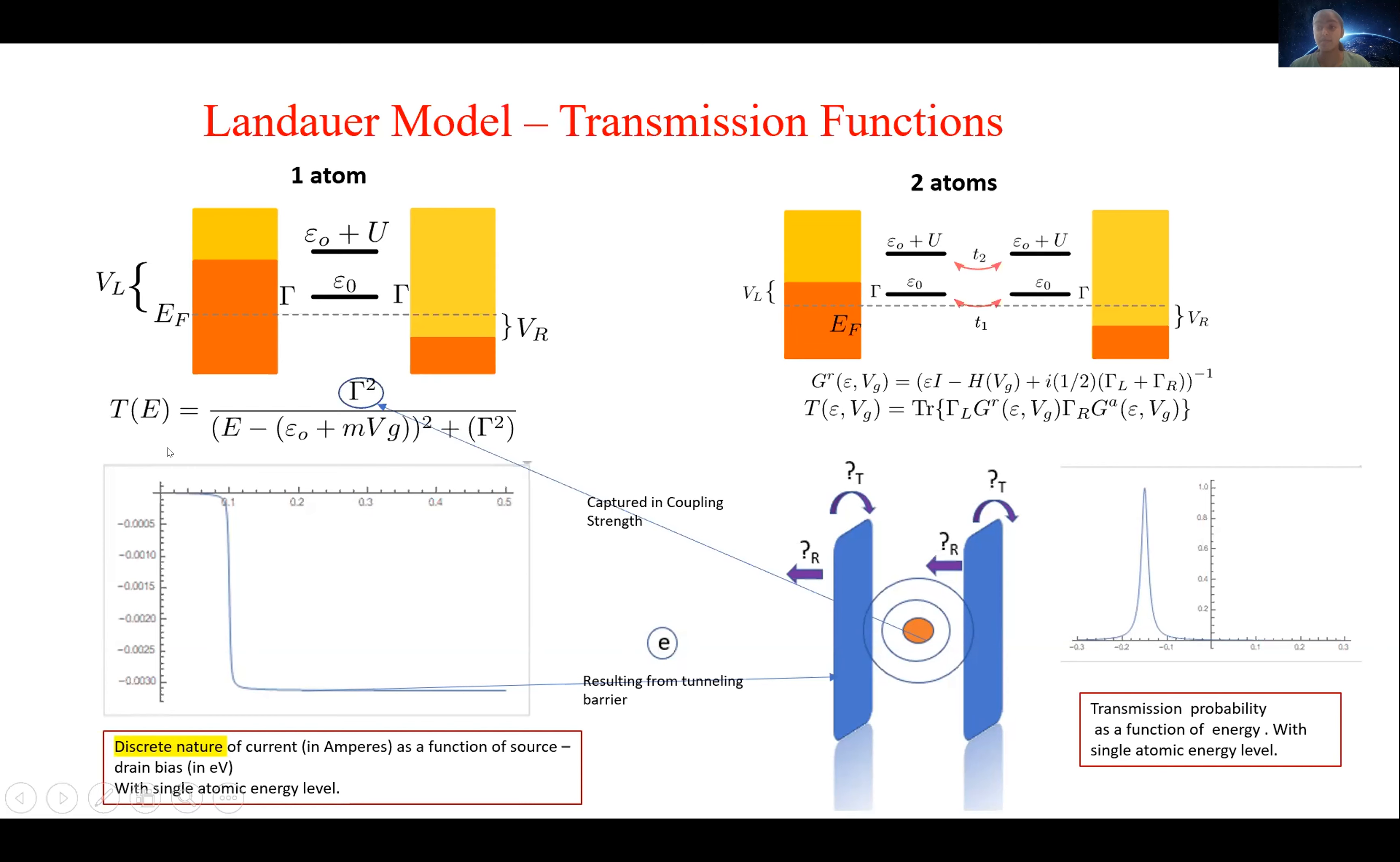So the transmission function is dependent both on this coupling strength and the gate voltage mentioned previously. And the transmission function is the distribution of energy levels within the atom that electrons can occupy. So an increase in coupling strength correlates to a broadening of this transmission function here pictured on the bottom right.